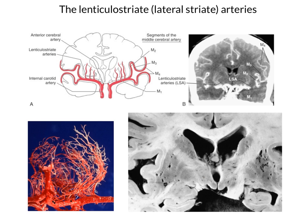Furthermore, if you have one in the basal ganglia this could potentially lead to features of a basal ganglia disorder — Parkinsonian-like features. This is why lacunar strokes are so diverse and lead to such different clinical pictures, because the lenticulostriate vessels supply such a large area of very eloquent brain.